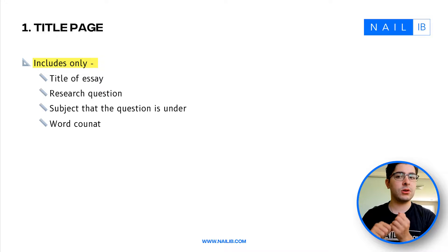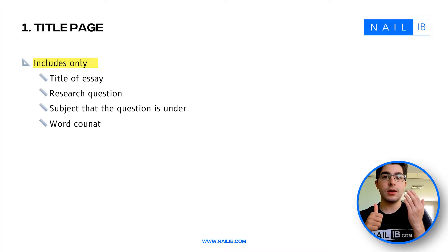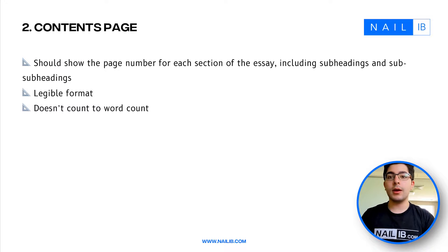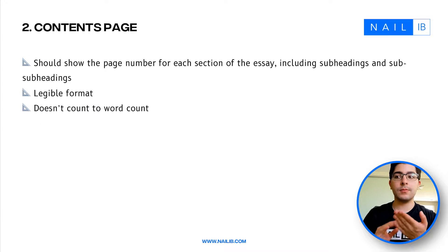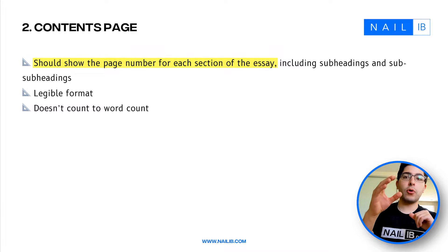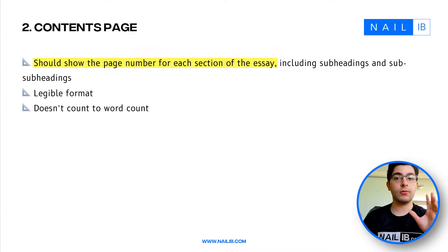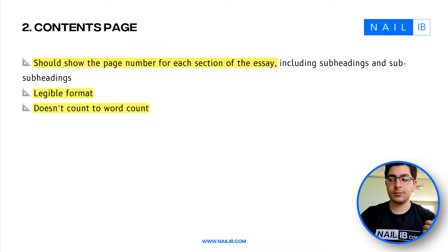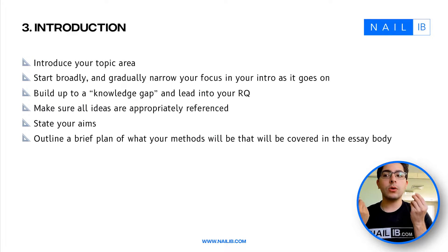As long as your word count is under 4,000 words, include it on the title page along with the subject — for example, 'Mathematics: Applications and Interpretation.' For the contents page, show the page number for each section, including subheadings within the body and their corresponding page numbers. Make sure it's in a legible format. Both the title page and contents page do not count toward your word count.